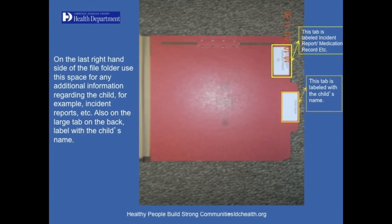On the last right-hand side of the file folder, use this space for any additional information regarding the child, for example, Incident Reports. On the large tab on the back, label it with the child's name. The top tab is labeled Incident Report, Medication Records, etc. Underneath, the large tab is labeled with the child's name.